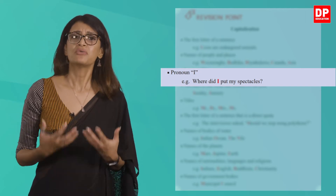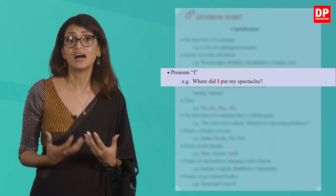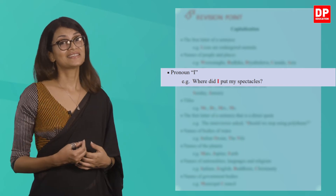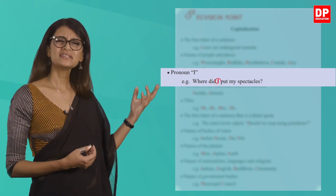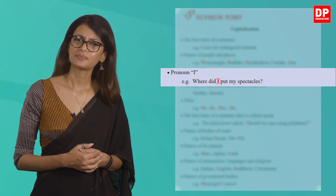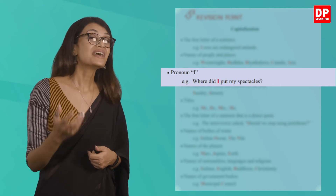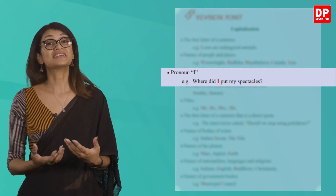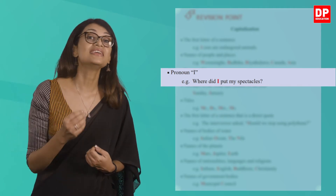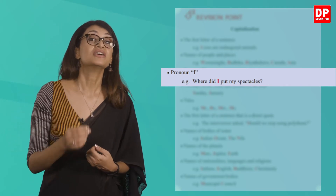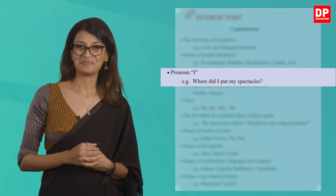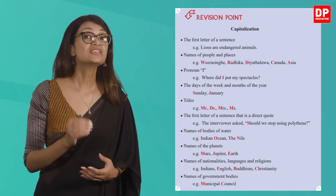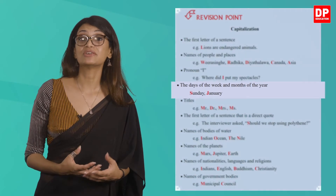Next, you are told to capitalize the pronoun 'I' every time you use it — write it out as a capital I. The example given is: 'Where did I put my spectacles?' So when writing in the first person, or if you were to write a diary entry, you need to remember to capitalize 'I.'